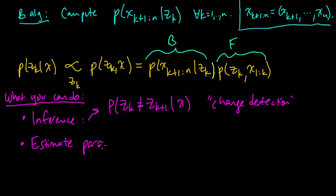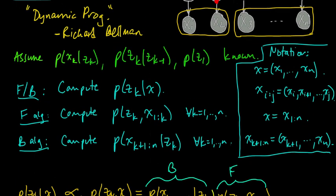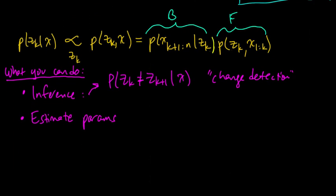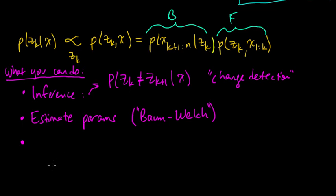You can also estimate the parameters of your HMM — that is, the transition matrix T, the emission probabilities, and possibly the initial distribution. If the emission probabilities use parameterized distributions like Gaussians, you would estimate the mean and variance for each state. This is done using the Baum-Welch algorithm, which couples the forward-backward algorithm with expectation maximization. We'll talk about expectation maximization a little later.